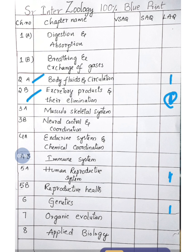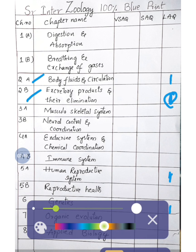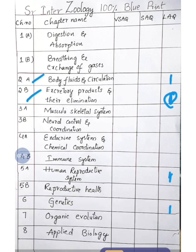Coming to short answer questions, the chances of asking are: from Digestion and Absorption — one; Breathing and Exchange of Gases — one; Neural Coordination — one; Endocrine System — one; Immune System — one; Genetics — one; Organic Evolution — one; Applied Biology — one. So a total of eight short answer questions will be given, out of which six should be written. The Musculoskeletal System also has a chance of one short answer question.